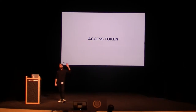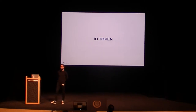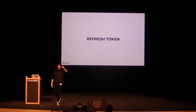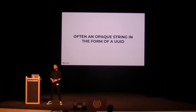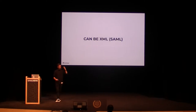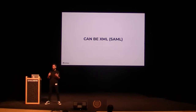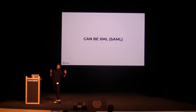There's an access token — I think we've all heard of access tokens. There's an ID token and refresh tokens. These are three of the most common ones, and they're often an opaque string in the form of a UUID, which means they only mean something if you can match that UUID to a permission, a user, or something else. Tokens can also be XML — for example, if you use the SAML protocol, you have an XML object that contains some information and serves as a token. But SAML is a bit old; we don't use XML as often as we did back in the day. So we're going to look at JSON Web Tokens.